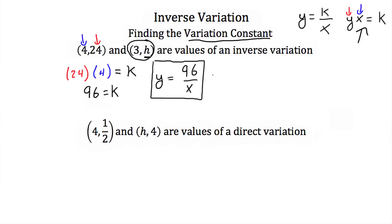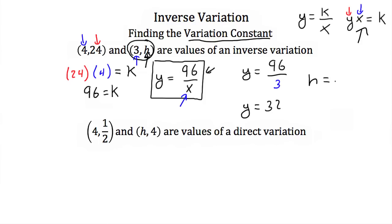All we do is take this equation and plug in 3 for x. We'll have y is equal to 96 divided by 3. 96 divided by 3 is 32. So if our y is 32 and h is our y-coordinate, that means h is equal to 32.